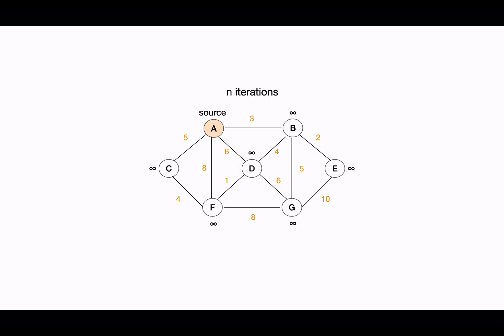Now let's find out the time complexity. First we go through each vertex to find the shortest path. While doing so, we find the adjacent vertex with minimum distance from the source node. In the worst case there might be N-1 vertices connected to any node, so total iterations in the worst case will be N multiplied by N-1, which we can take as N squared. Hence the total time complexity will be O(N²).